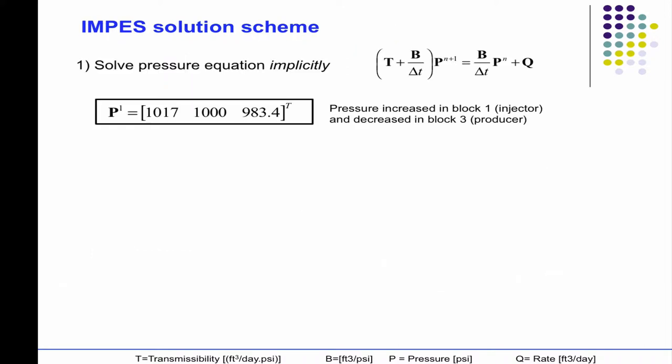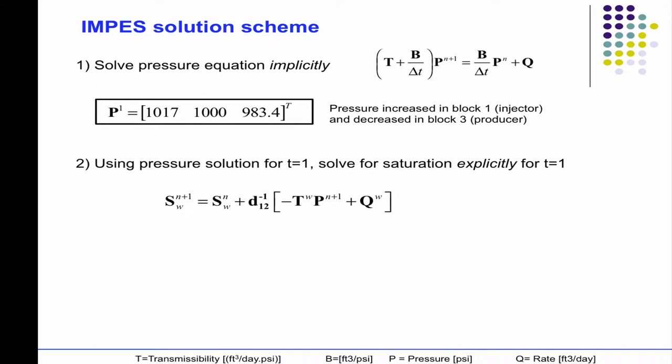So after you solve one step, these are the pressures you get. Initially, they were 1,000. You can see they've changed. At the end of step one, then you plug those values into the saturation equation.